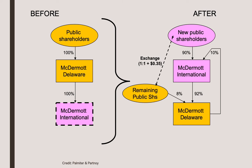Now the shareholders, which previously owned McDermott Delaware, own McDermott International. And there are a few remaining public shareholders that were not happy about this merger, and they continued to own McDermott Delaware. It is those dissenting shareholders that are of issue in this case. Take a careful look at the numbers and percentages: McDermott Delaware, after the reorganization, owns 10% of McDermott International.